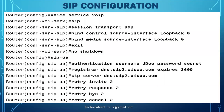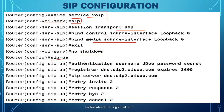For SIP configuration on the gateway, the commands start with 'voice service voip' to enter VoIP mode, then 'sip' to enable SIP. Key commands include: transport udp, bind control source-interface, bind media source-interface, and 'no shutdown'. For authentication, use 'credentials' with 'authentication username <username> password <password>'.